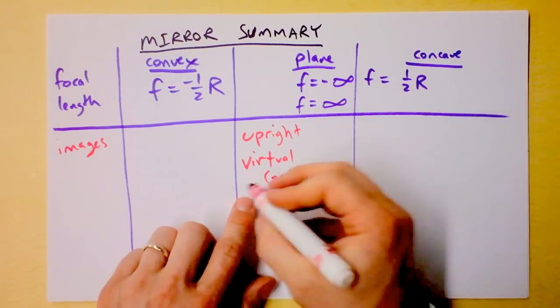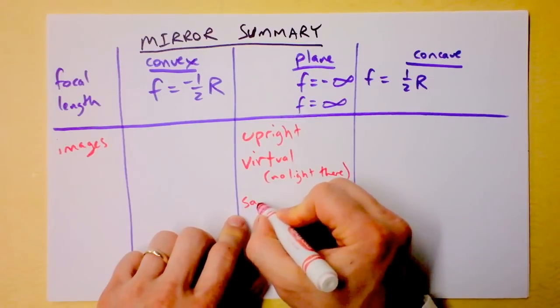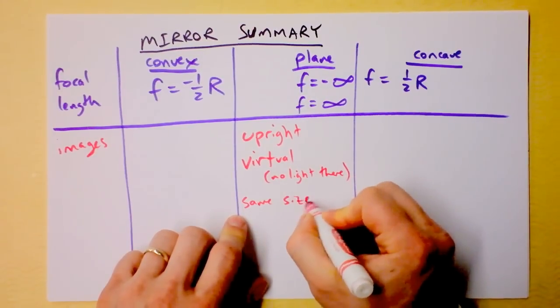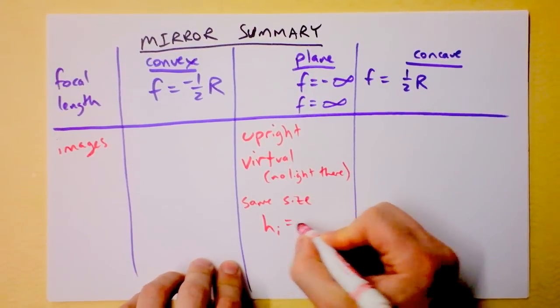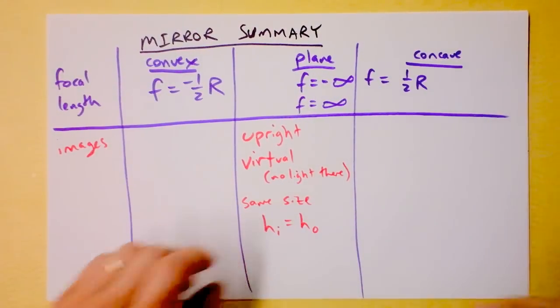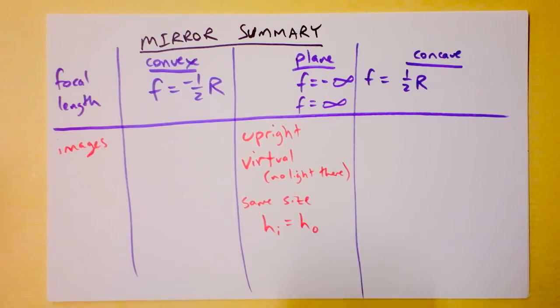You think there's an object on the other side that's creating the light that's hitting your eyes. So it's a virtual image because no light there. And the third thing we know is that the image is the same size as the object. So I would say height of image is height of object.